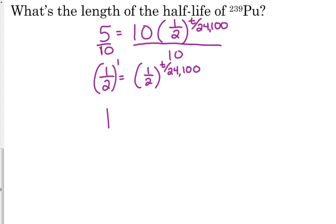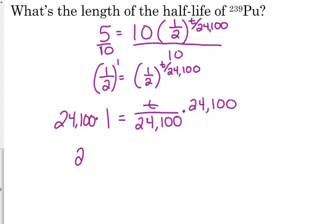Well, this side over here is to the first power. This side is the power of T over 24,100. So, to solve for T, we multiply both sides by 24,100. So, that means that the length of the half-life is 24,100 years.